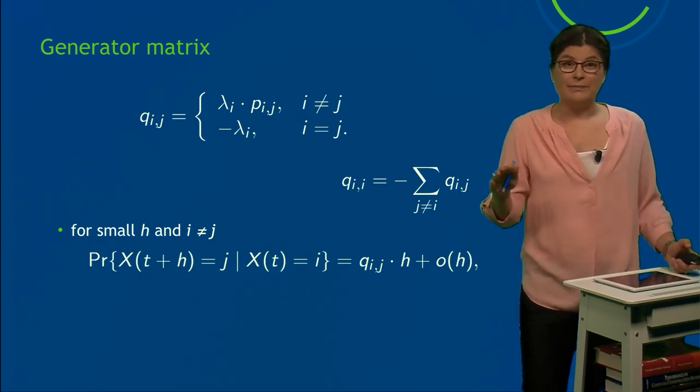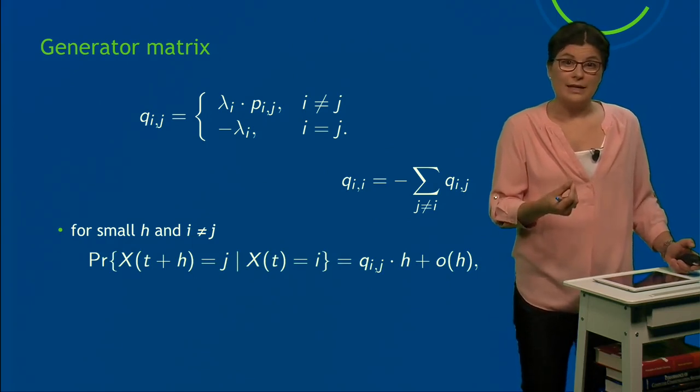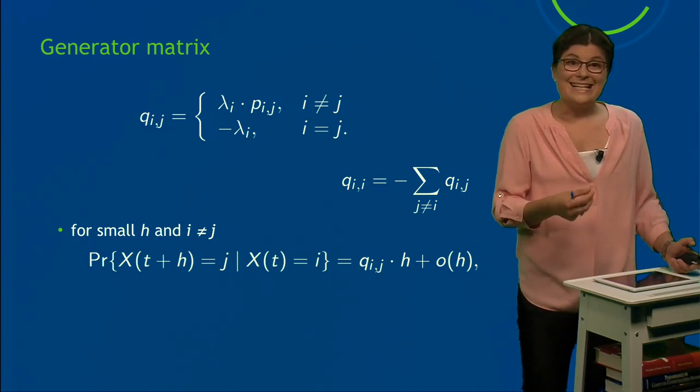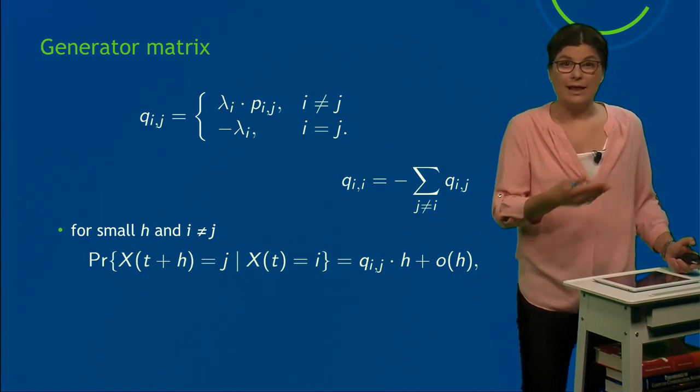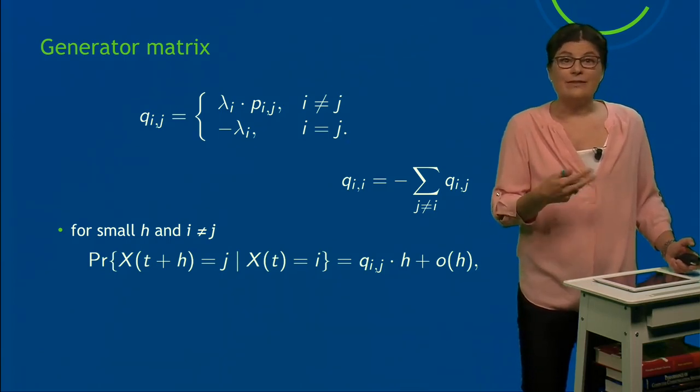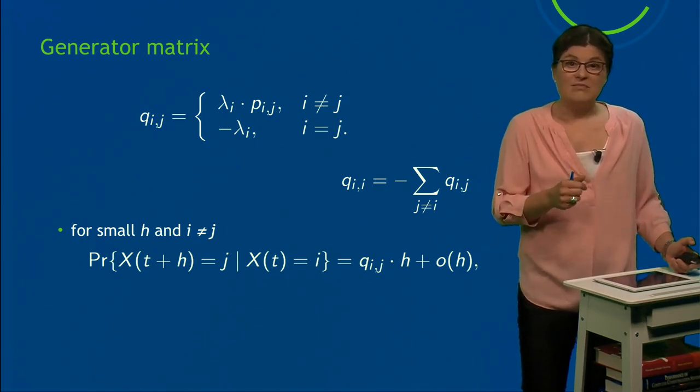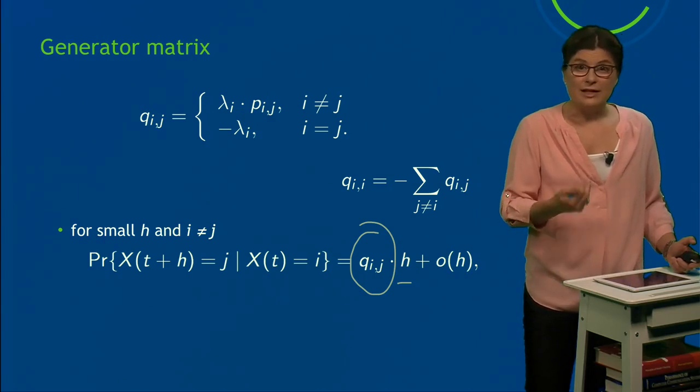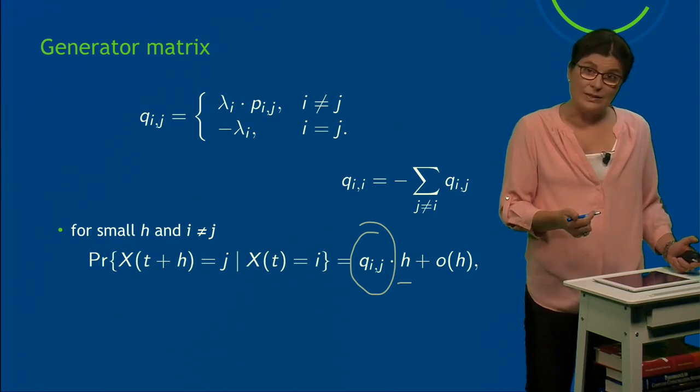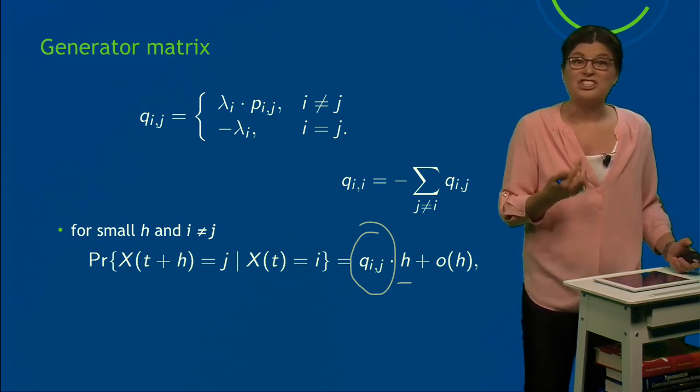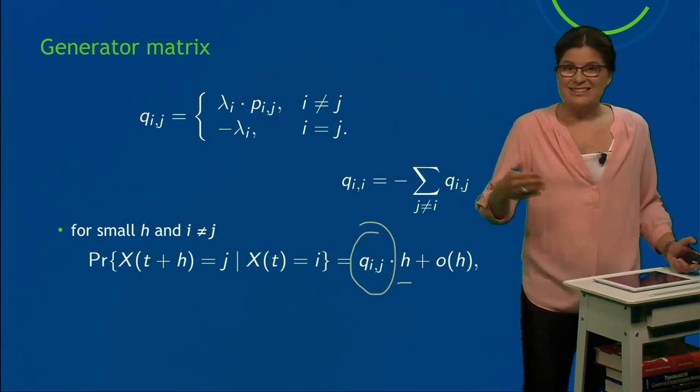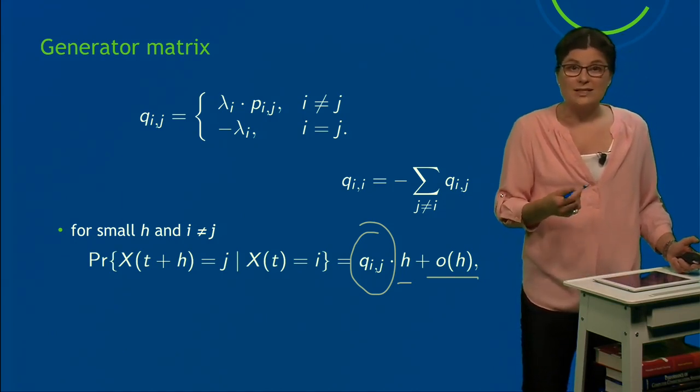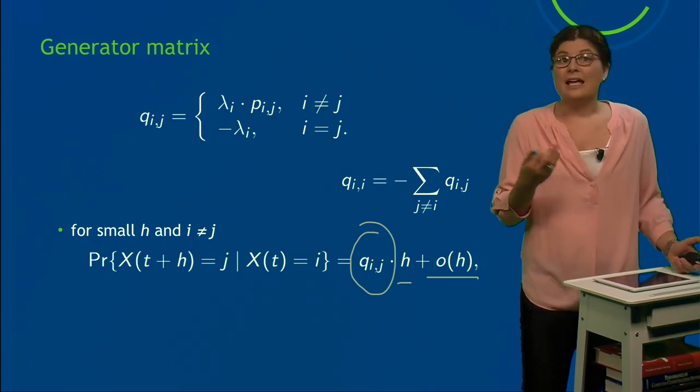Coming back to the behavior over time. So for small time h and i ≠ j, I can write down the probability to be in state j at time t+h—recall X is the random variable that we are looking at—given that the random variable was in state i at time t. And this is the same as Q_ij × h. h is the time I give my CTMC to move.